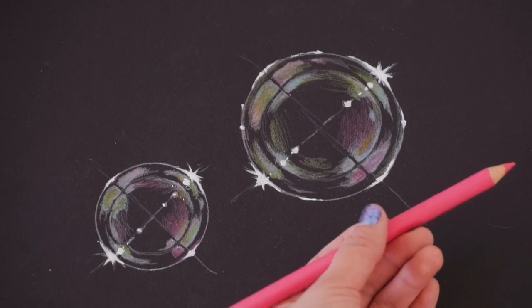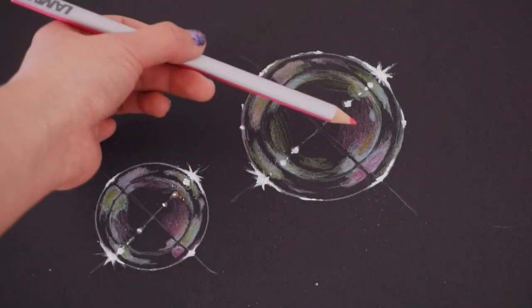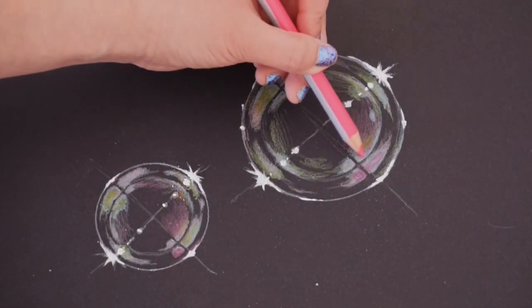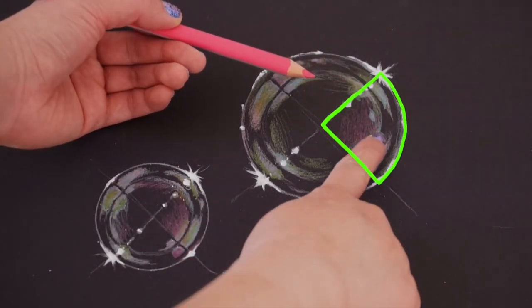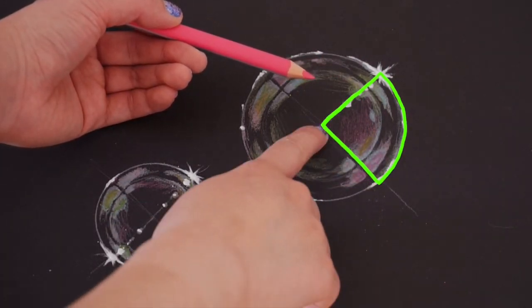As a final finishing touch, I realized that adding some pink shading to a single quadrant of the bubble makes it look even more realistic. Use the guidelines to make sure that you're only coloring in one quarter of the bubble like I'm doing here.